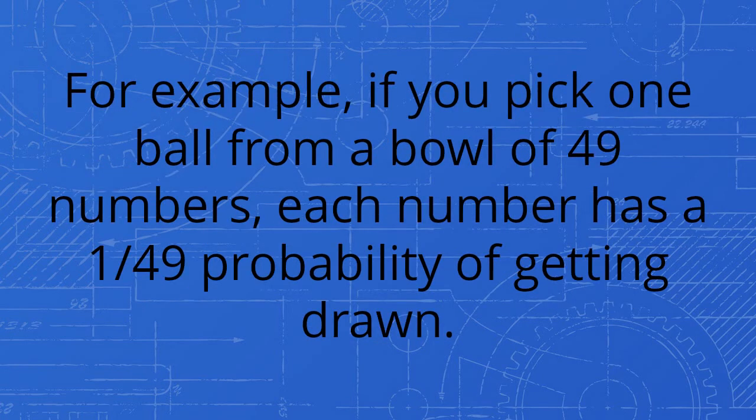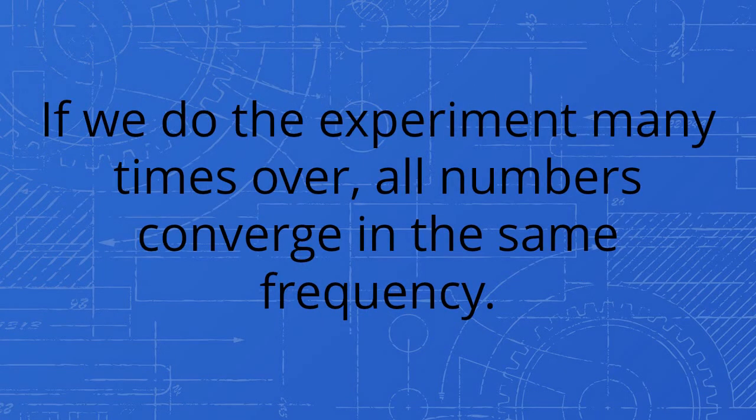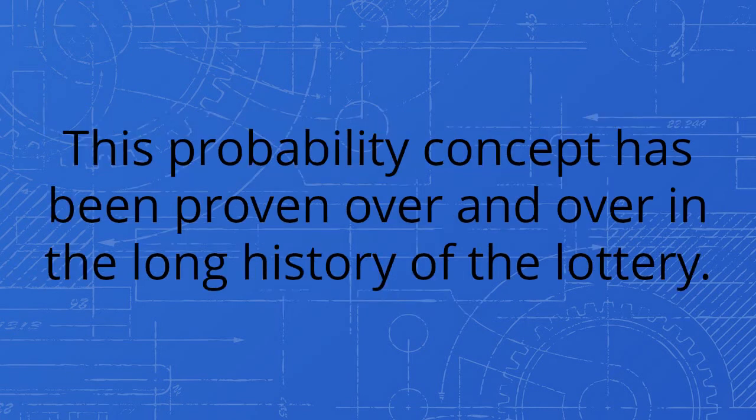For example, if you pick one ball from a bowl of 49 numbers, each number has a 1/49 probability of getting drawn. If we do the experiment many times over, all numbers converge in the same frequency. This probability concept has been proven over and over in the long history of the lottery.